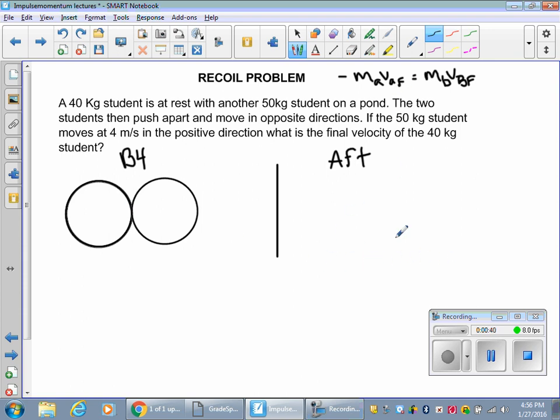So when I subtract one of them over to start solving for a missing velocity, that's why I end up with negative momentum equals positive momentum. Notice that they're both final. Doesn't matter too much but...